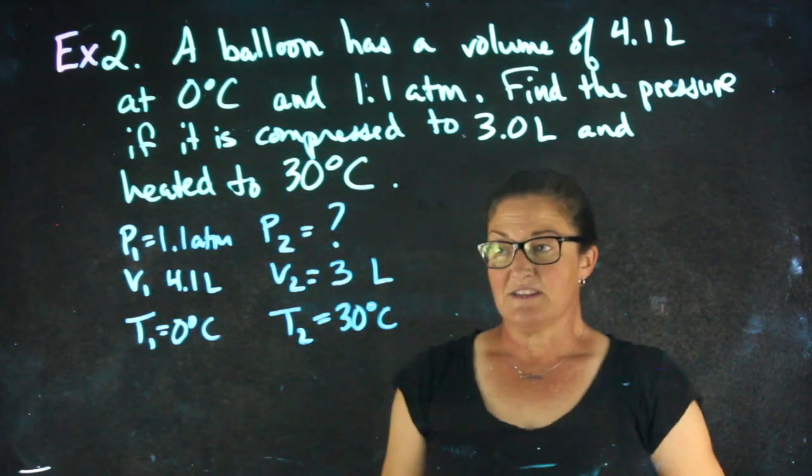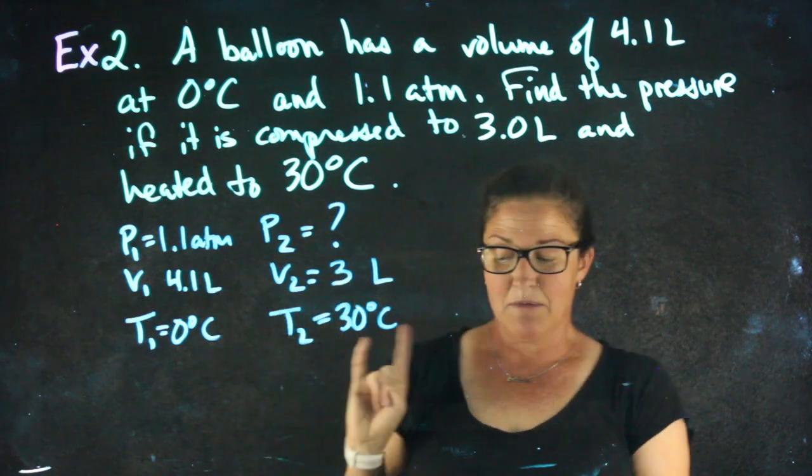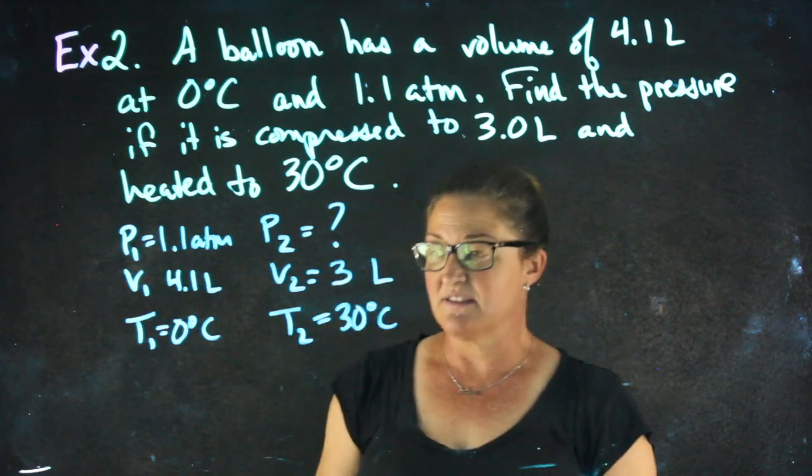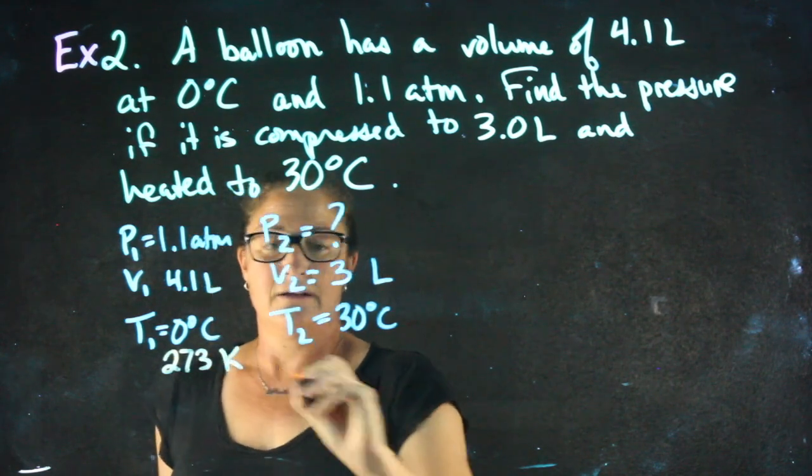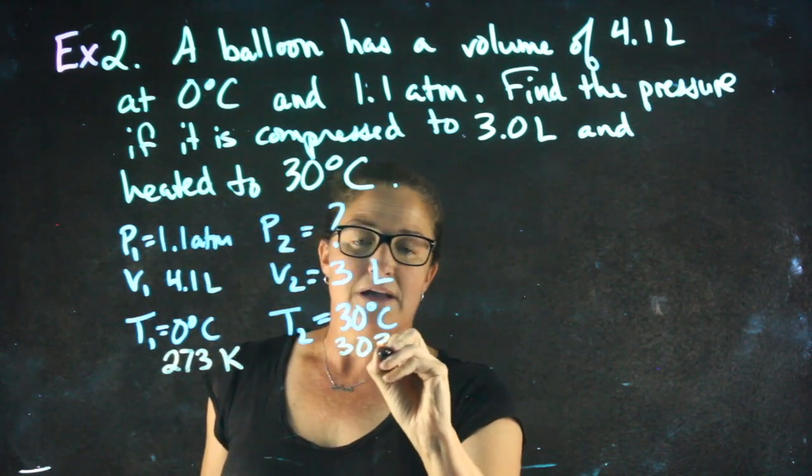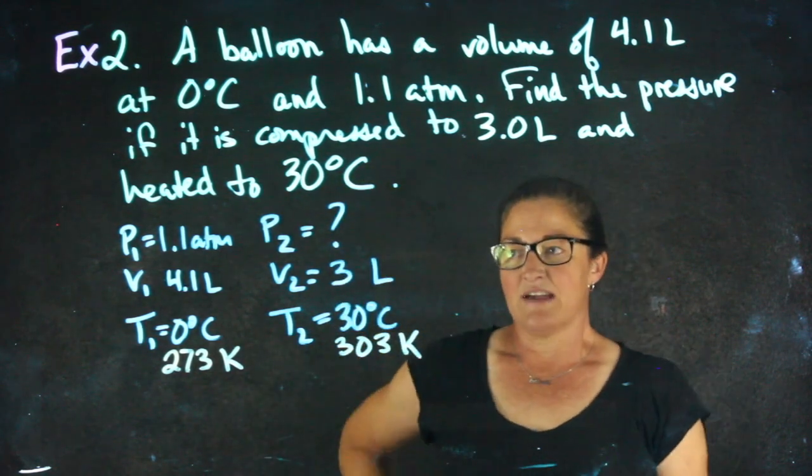Before I plug in, I'm going to check my units here. Volume is in the same units. Temperature is in the same units, but I can't plug in Celsius. So this will be equal to 273 Kelvin. This is equal to 303 Kelvin. Now I'm ready to plug into the combined gas law.